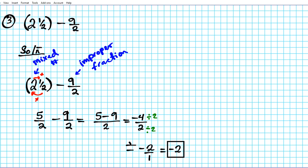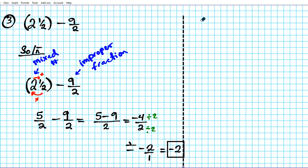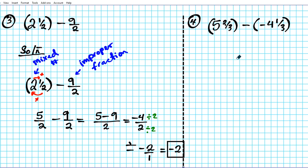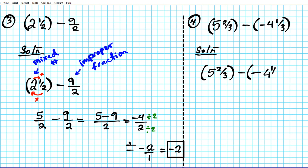Alright, now let's take a look at the last one — question four. Let's say you want to find the difference between five and two-thirds and negative four and one-third. We have two mixed numbers and two adjacent signs next to each other, so there are two problems to fix: we need to convert both to improper fractions and resolve the product of the adjacent signs.